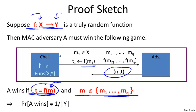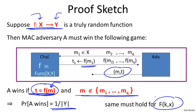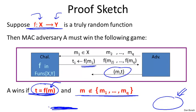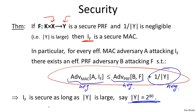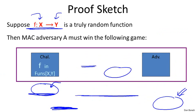If the adversary guesses the value of the function at point M, he'll get it right with probability exactly 1 over |Y|, and the tag he produced will be correct with probability exactly 1 over |Y|. Because the function F is a pseudorandom function, the adversary behaves the same whether we give him the truly random function or the pseudorandom function — the adversary can't tell the difference. As a result, even using a pseudorandom function, the adversary has advantage at most 1 over |Y|. This is exactly why we got an error term of 1 over |Y| in the security theorem — it's the only way the attacker can win.